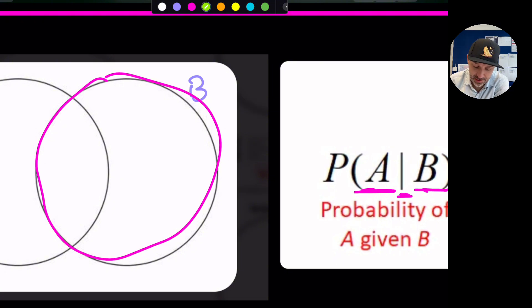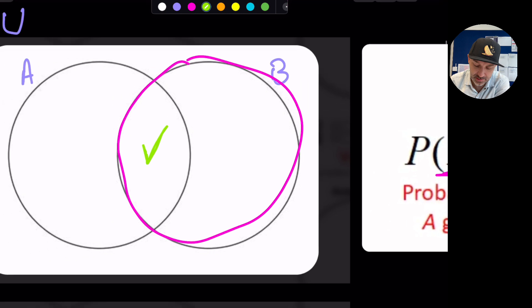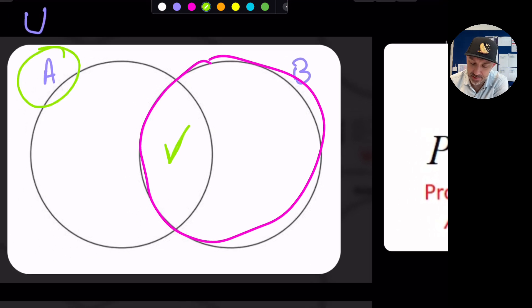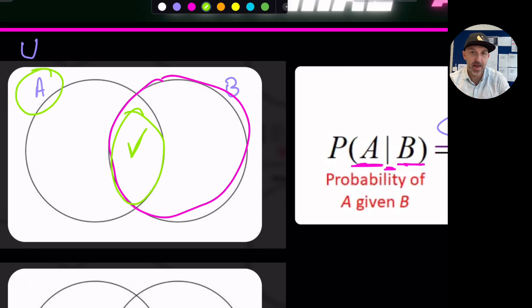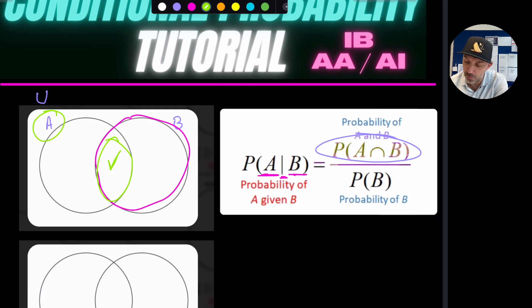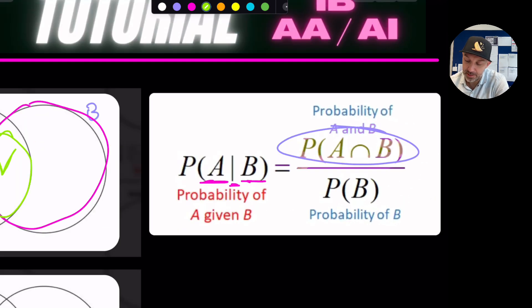Okay so what is the event of A happening? Well the event of A happening is the centre. Okay because this is part of A. Okay it's the centre out of the total circle B. So if we're looking at a Venn diagram it's basically the centre out of B. So that's why the formula is easy to remember is that it's the centre out of B.